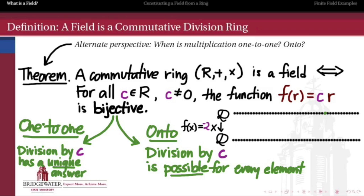As an example, if we look at the multiplication by −2 function on the rational numbers, it associates every rational number like 17/14 with its product by −2, in this case −17/7. This is a one-to-one multiplication, but it's also onto — we can multiply every rational number by −2, and we can also divide every rational number by −2 and get another rational number. So the rationals are the prototype of a field in which we can do all the arithmetic we could ever need.